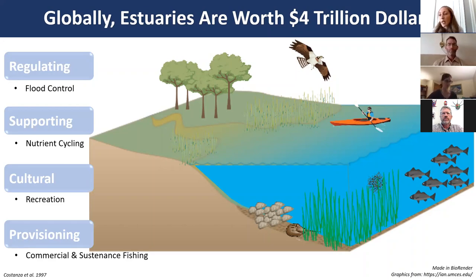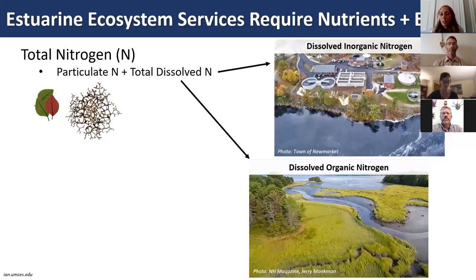All of these ecosystem services require both nutrients and energy to sustain estuarine ecosystems. Those nutrients and energy can be broken down into several categories, the first being the total nitrogen pool, which is the summation of particulate nitrogen and total dissolved nitrogen.